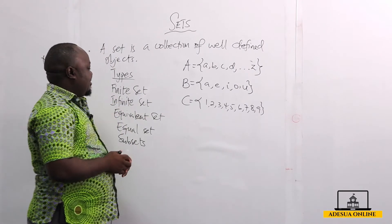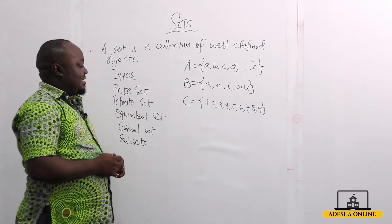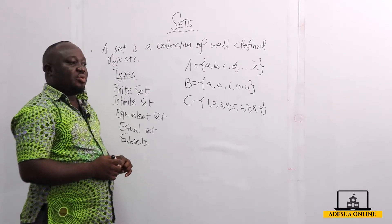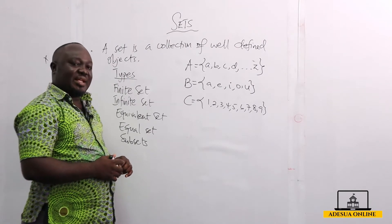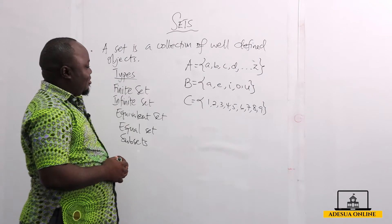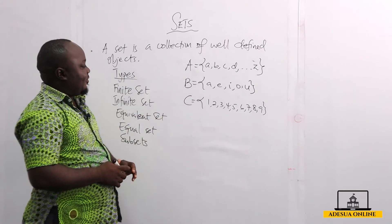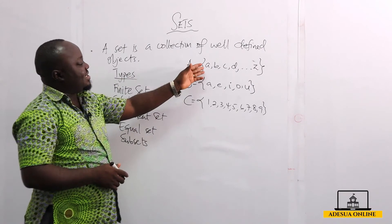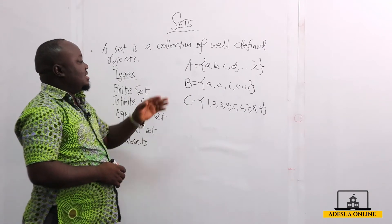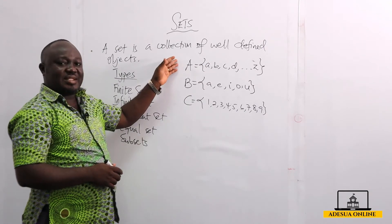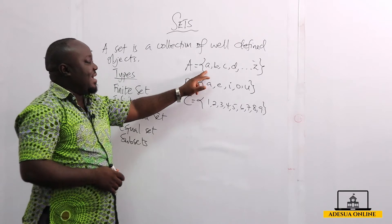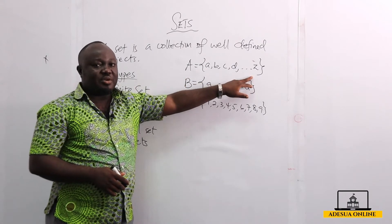Now let's talk about the finite set. A finite set is a set whose beginning and end can be found. So for example, when I talk about A — A, B, C, D up to Z — which is the set of English alphabets, this is a finite set because its first member and last member can be found.